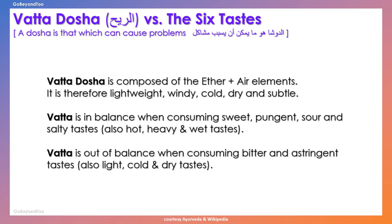The vata dosha is composed of the ether and air elements. It is therefore lightweight, windy, cold, dry, and subtle. Vata is in balance when consuming sweet, pungent, sour, and salty tastes — also hot, heavy, and wet foods. Vata is out of balance when consuming bitter and astringent tastes, or light, cold, and dry foods.